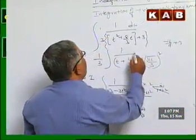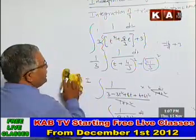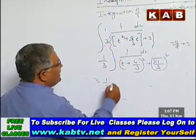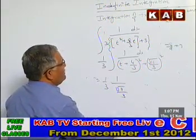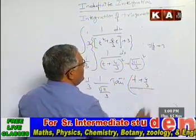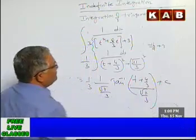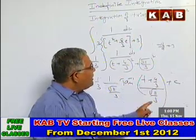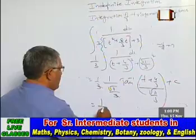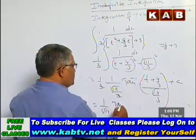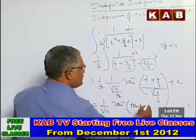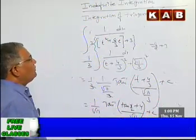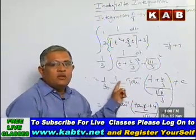This is now of the form 1 / (x² + a²). The integration of 1/(x² + a²) = (1/a) tan⁻¹(x/a) + c. So the result is (1/3) × (1/(√11/3)) × tan⁻¹[(t + 4/3) / (√11/3)] + c. Substituting back t = tan(x/2), the answer is (1/√11) tan⁻¹[(3 tan(x/2) + 4) / √11] + c. This was a previous year IP question.